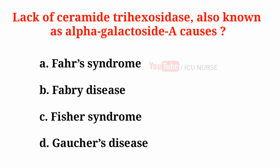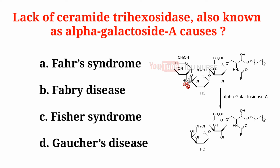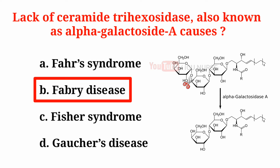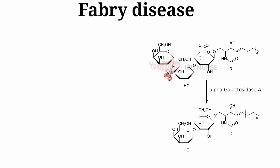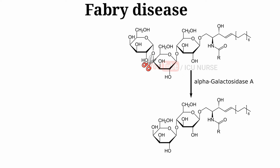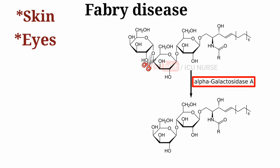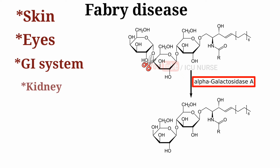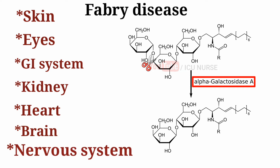Lack of ceramide trihexosidase, also known as alpha-galactosidase A, causes: A. Farr's syndrome, B. Fabry disease, C. Fischer syndrome, D. Gaucher's disease. The correct answer is B. Fabry disease. Fabry disease is a rare genetic disease with a deficiency of the enzyme alpha-galactosidase A. The disease affects many parts of the body including the skin, eyes, gastrointestinal system, kidney, heart, brain, and nervous system.